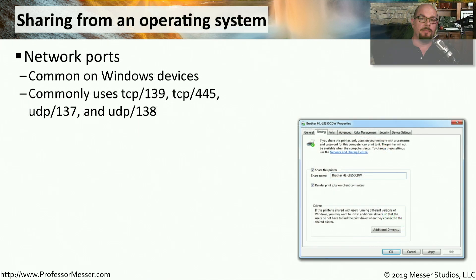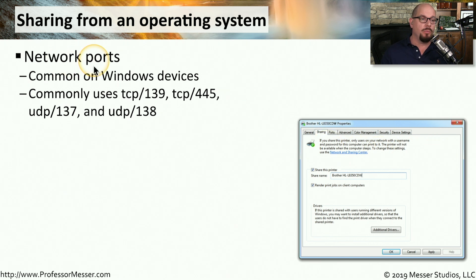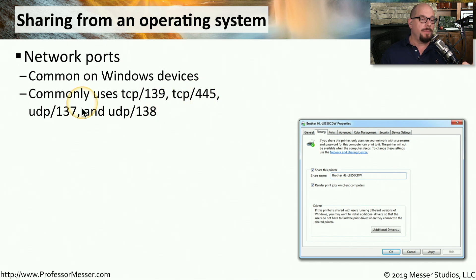When you're printing from a Windows device to one of these network-connected printers, you can usually give the name of the printer and Windows will be able to find it on the network. But occasionally you have to specify an IP address and the network ports used by that printing process. On Windows, it's common to see network ports of TCP 139, TCP 445, and UDP ports 137 and 138. If you're configuring a local firewall on your computer to provide printing, you may have to open those port numbers to allow access to that network printer.